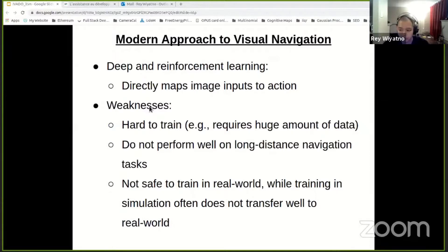Given image input, you predict action, what navigation control it should output. And it's not also safe to train this in the real-world environment. And simply training these models in simulation does not work because they typically do not transfer well to the real-world situation.